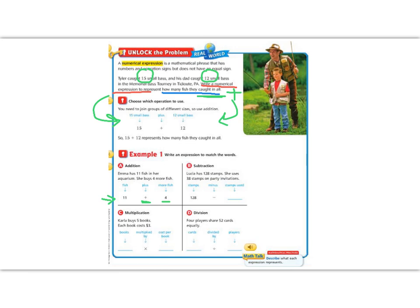B. Lucy has 128 stamps. She uses 38 stamps on party invitations. Uses is usually a keyword that we're getting rid of. So we're going to subtract. 128 minus 38 is how many she used.